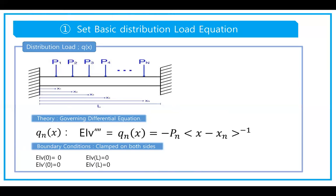We have boundary conditions because the beam is clamped on both sides. As mentioned earlier, these boundary conditions give us that EIv at zero equals zero and EIv prime at zero equals zero. Since the other end of the beam is also clamped, both conditions are zero there too.